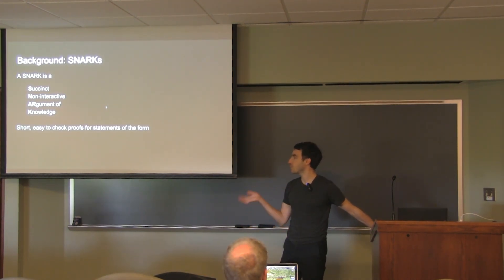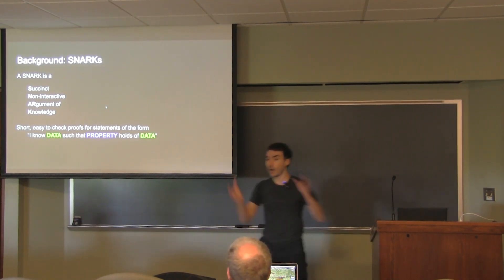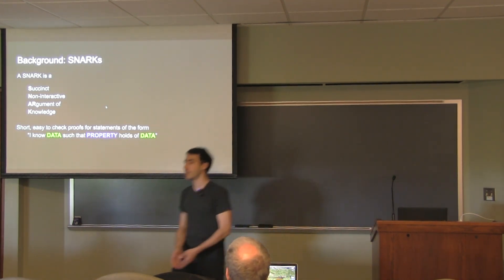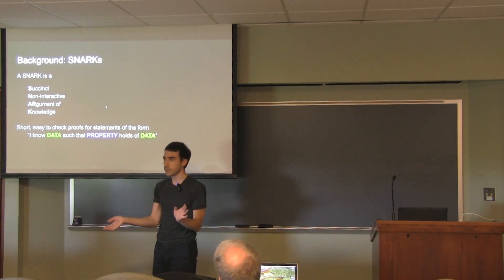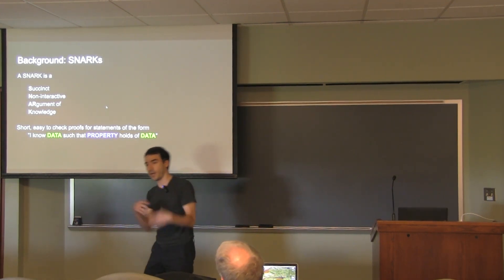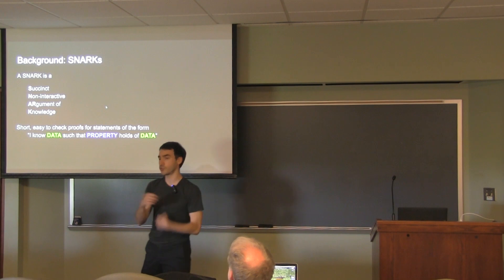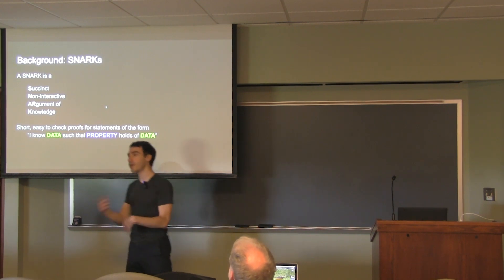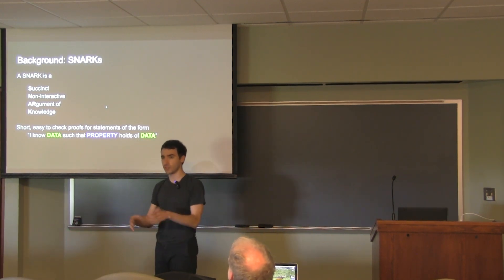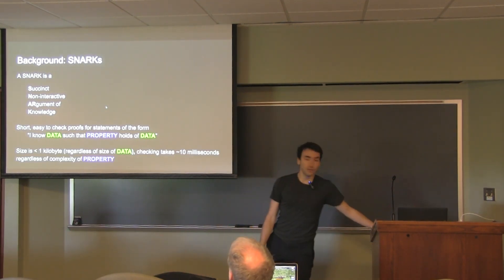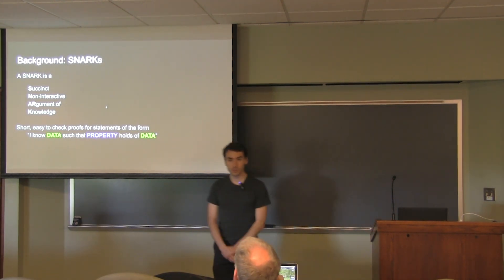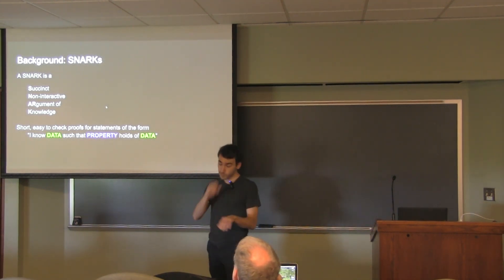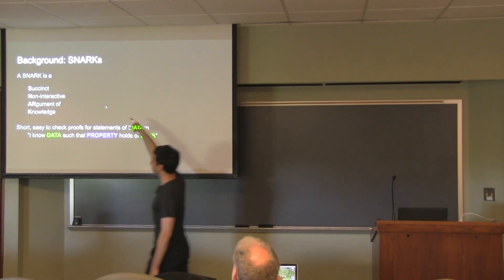SNARKs are short and easy-to-check proofs for statements of the following form: I know some data such that some property holds over that data. Like I know some blockchain such that all the transactions in it are valid, and if you were to aggregate it, the result would be such and such — but without specifying what the data is. A lot of the time people say ZK SNARK, where ZK is zero-knowledge, but a SNARK doesn't have to be zero-knowledge.